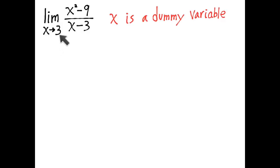Now let's go back to talking about limits. Limit as x approaches 3 of x squared minus 9 over x minus 3. Guess what? x is a dummy variable. It's just a placeholder.